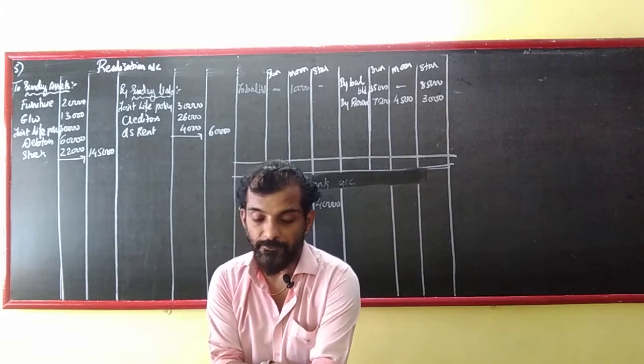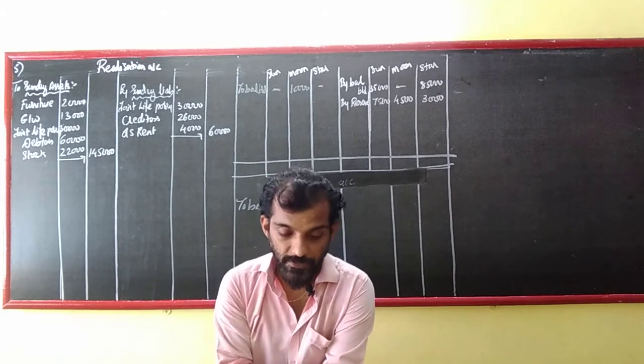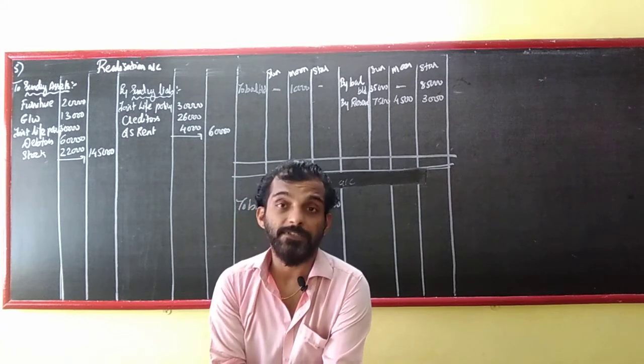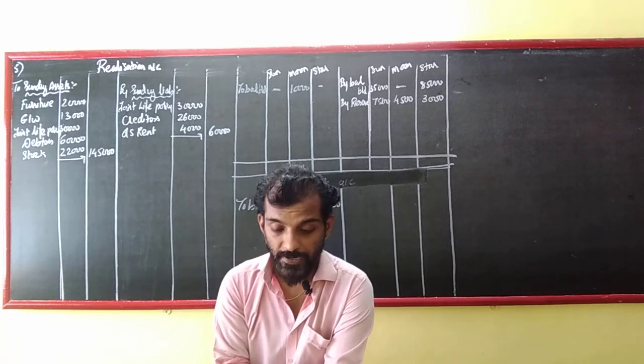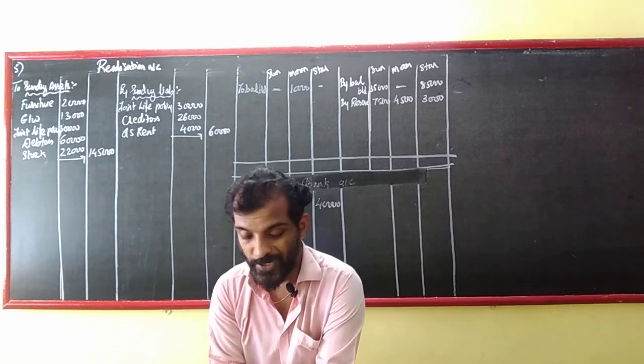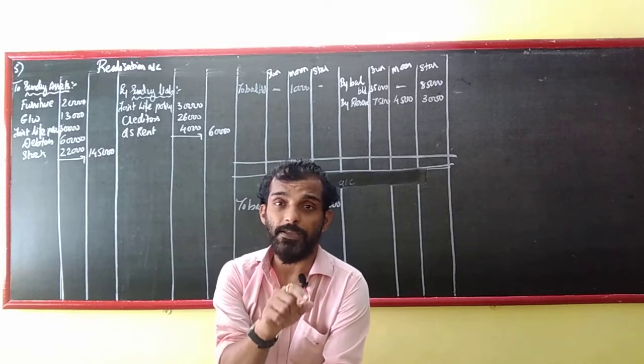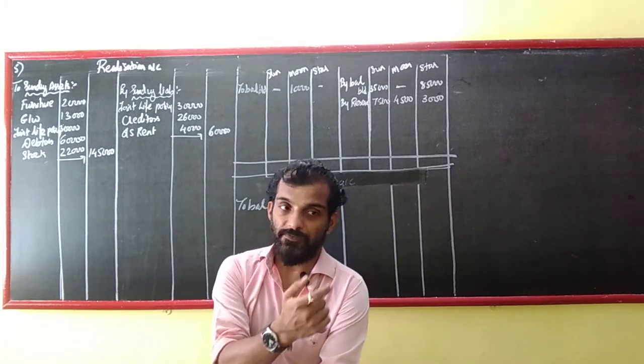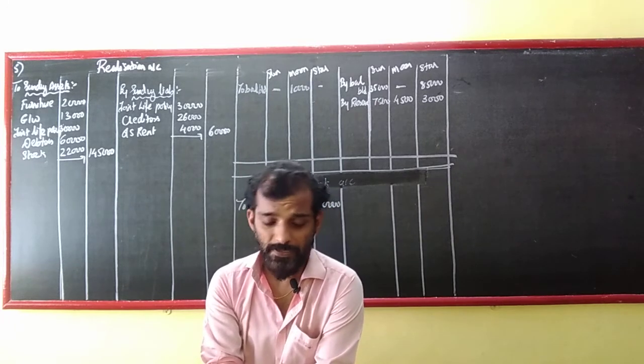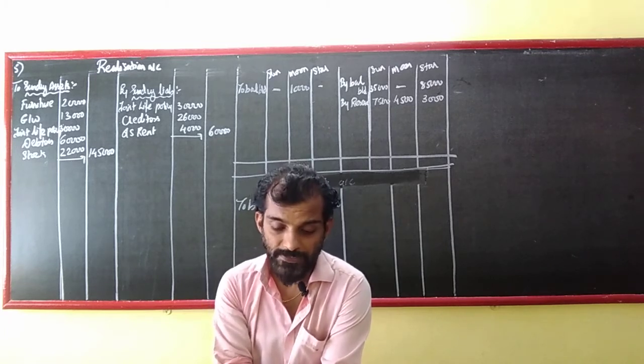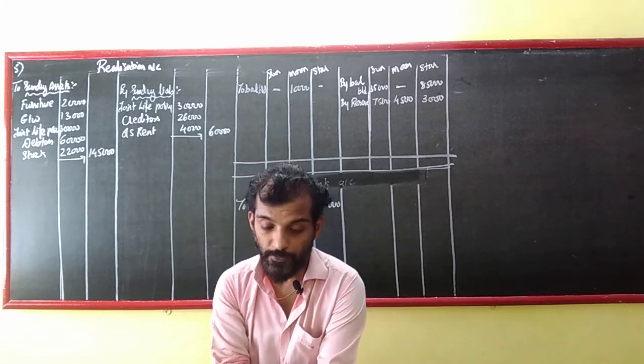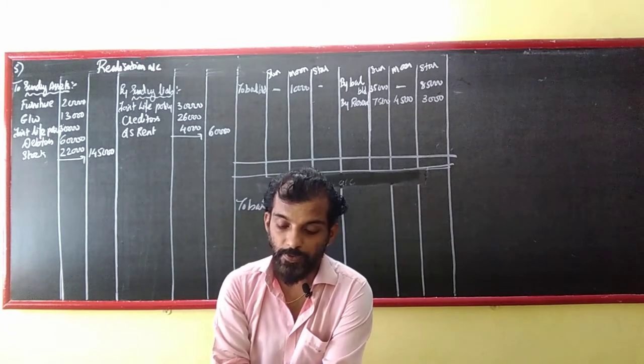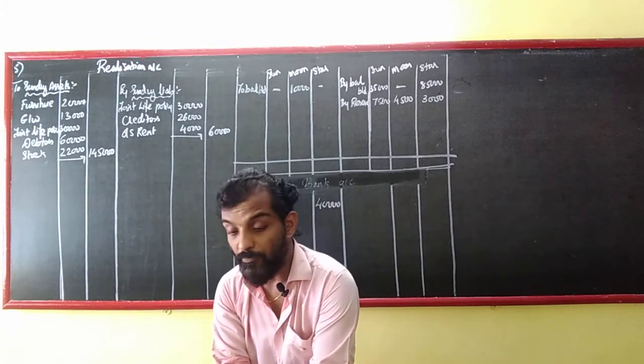Sun, Moon and Stars are partners in the firm sharing profit and loss in the ratio of 5:3:2. They agreed to dissolve the firm on 31st March 2019. Their balance sheet was as under: Capital - Sun 35,000, Moon 85,000. Reserve fund 15,000. Joint life policy fund 30,000. Sundry creditors 26,000. Outstanding rent 4,000. Furniture 20,000. Goodwill 13,000. Joint life policy 30,000. Sundry debtors 60,000. Stock 20,000. Cash at bank 40,000. And Moon's capital account shows 10,000 debit.